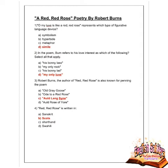Next question: Robert Burns, the author of A Red Red Rose, is also known by what pen name? The correct answer is Old Red Rose. The poem A Red Red Rose is written in Scottish dialect. Option B is correct — the poem is written in Scottish dialect.